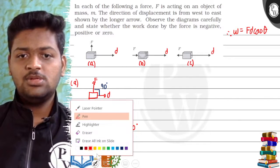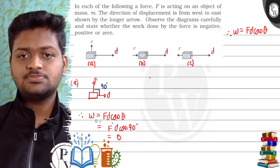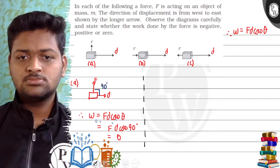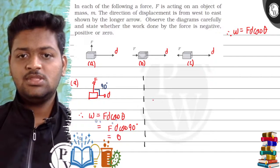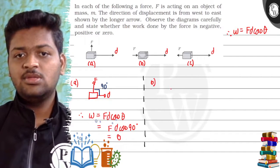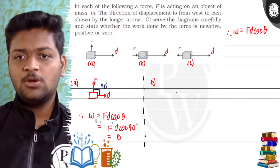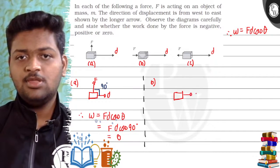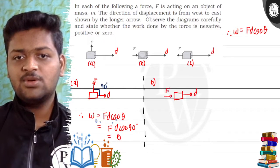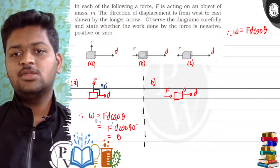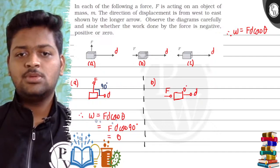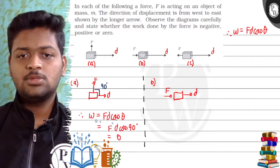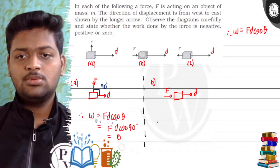Now we will discuss the second case. In the second case, what they have done is they have again taken a block. There's displacement in the forward direction and force is also in the forward direction. So the angle here is 0 degrees.